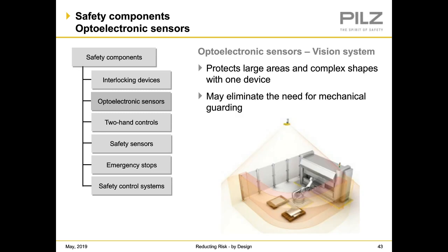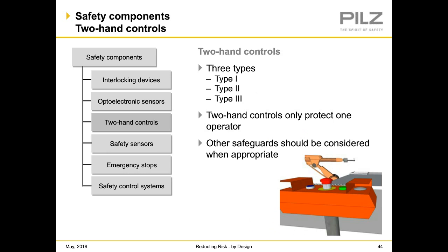A vision system example is a 3D camera — virtually a three-dimensional laser scanner that measures safe distances in all three dimensions, and can eliminate the need for mechanical guarding. We also have two-hand controls in three types: type one, type two, and type three. Two-hand controls protect the operator only — other safeguards may be needed to protect everybody else. A common application is a press or press brake: two-hand control keeps the operator's hands out of the operation, combined with a light curtain and physical guarding for everybody else.